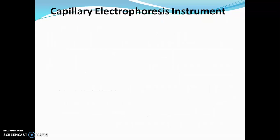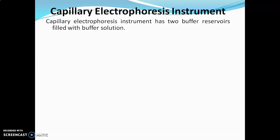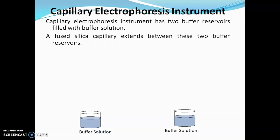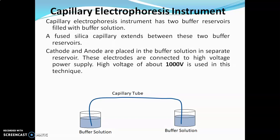Now we'll see the principle in detail. To understand the separation mechanism and principle of capillary electrophoresis, one must know the instrument. Capillary electrophoresis instrument has two buffer reservoirs filled with buffer solution. A fused silica capillary extends between these two buffer reservoirs. Cathode and anode are placed in different buffer solutions in separate reservoirs. These electrodes are then connected to a high voltage power supply. High voltage of about 1000 volts is used in capillary electrophoresis.